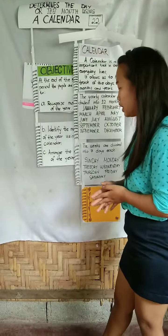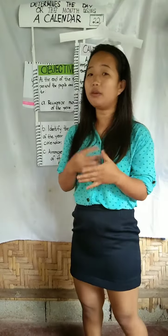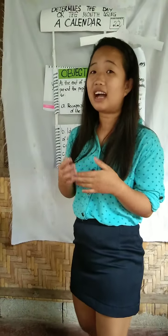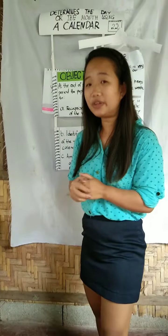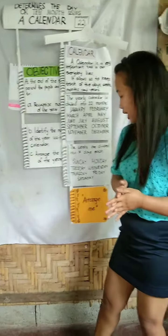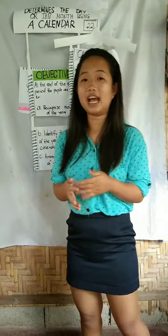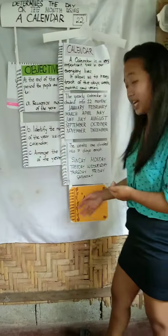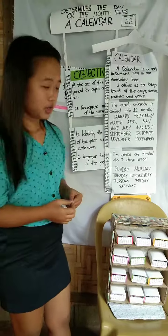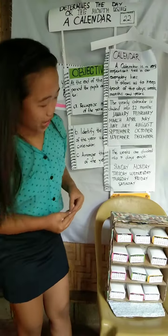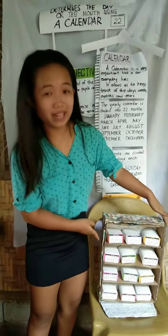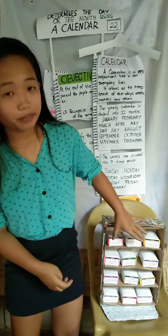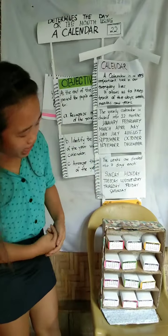Let's proceed. Para mabigyan pa kayo ng karagdagang information, gagawin na natin ang ating activity number 1. The activity name is Arrange Me. So, I have a big box here, and inside there are small boxes with the name of the month.